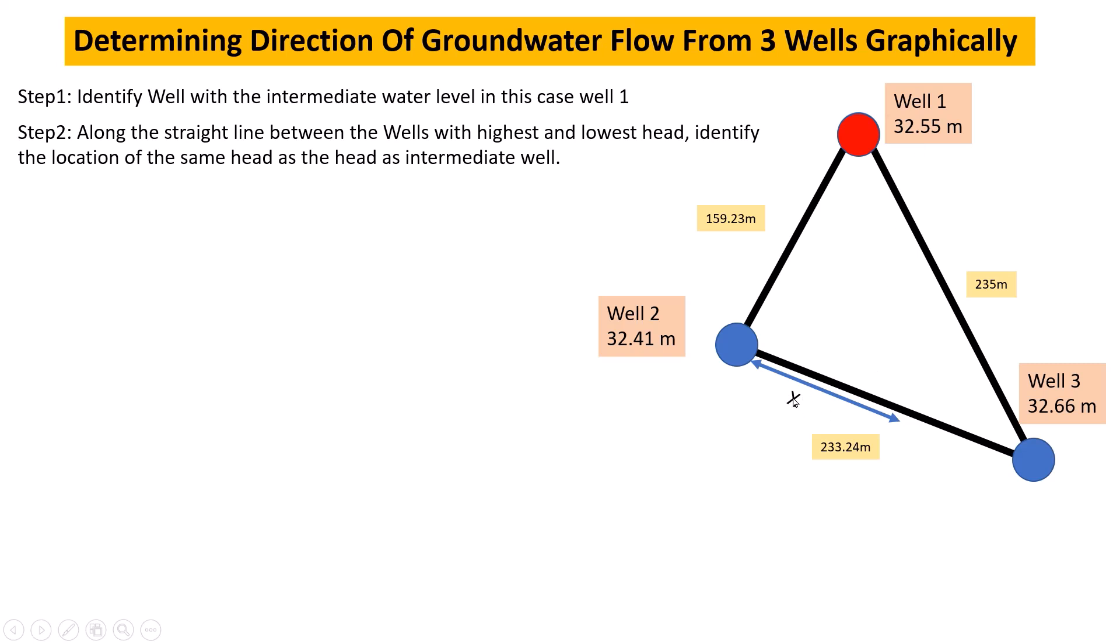We denote this location by x. The head at location x equals the head of Well 2 plus the difference of heads (Well 3 minus Well 2) divided by the length between them, times x.